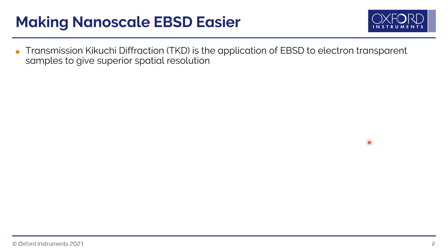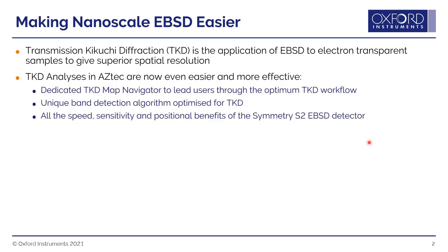The first thing I want to talk about is how we're making nanoscale EBSD easier, and this is done using Transmission Kikuchi Diffraction, which is essentially EBSD applied to electron transparent samples, giving us much better spatial resolution. In Aztec, we've introduced a dedicated TKD map navigator that leads the user step-by-step through this slightly modified process of collecting good quality TKD data. This also incorporates our unique band detection algorithm that has been specially optimized for the unique geometry of TKD, so we get really good quality data all the time.